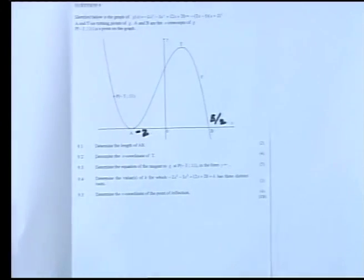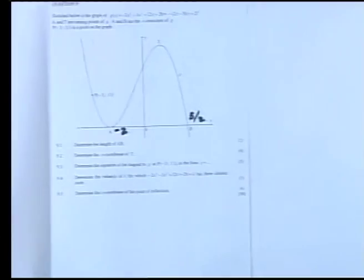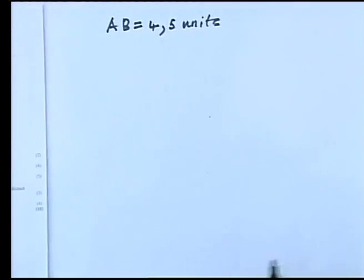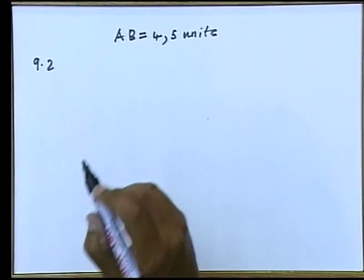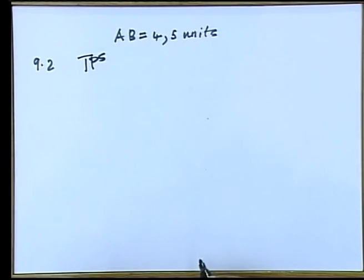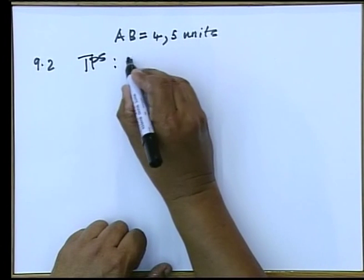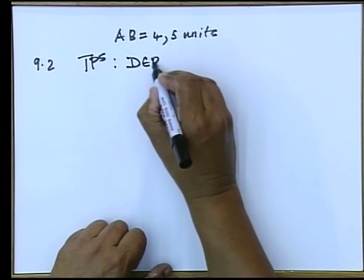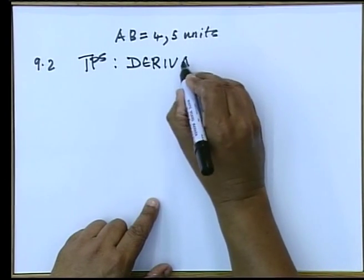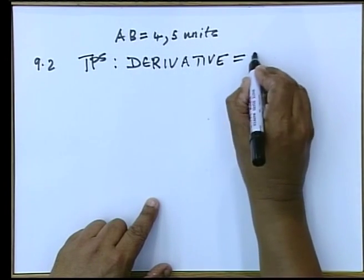But now they're asking you to find the turning point at T. So, let's just find out what needs to be done from there. If you now find the turning point for the cubic graph, the thing that should strike you straight away is that the derivative of that function will always equal 0.